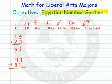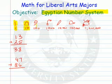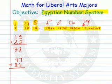They would use this symbol right here for 1, this one for 10, and this one for 100. If you notice, it's like our base-10 system, which makes it kind of nice for us to work with.